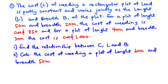For a question like this, we are given two sets of values for L, B, and C. We are going to use these values to form two simultaneous equations, then find the relationship between C, L, and B. Later we will plug in the values of L and B to find the cost of weeding for L equals 60 meters and B equals 50 meters.